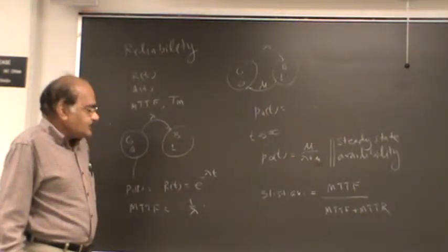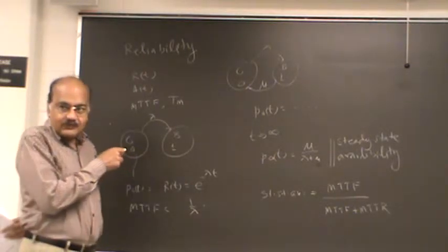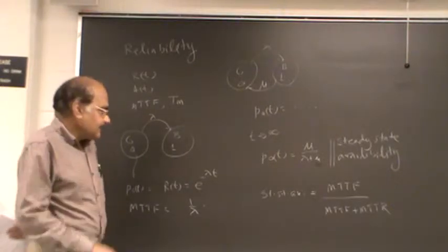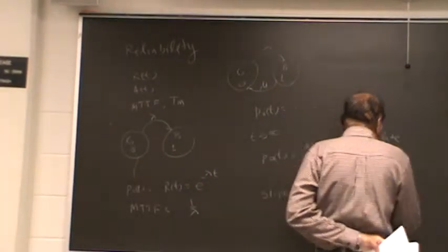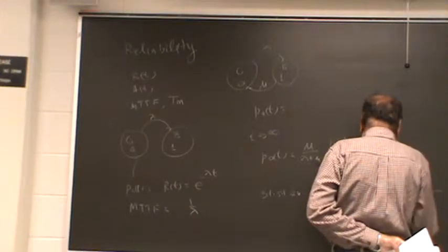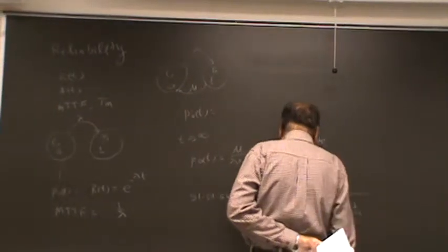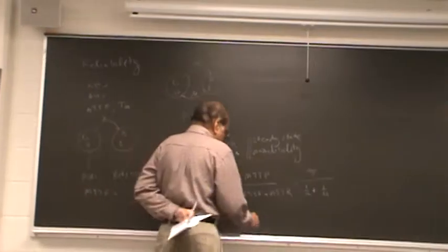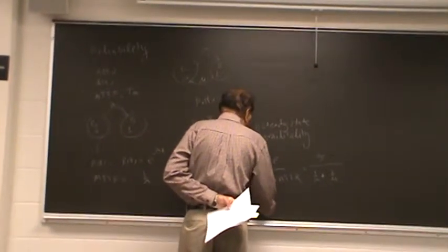So do you think that two equations are the same? Remember that mean time to failure is given by 1 by lambda, and mean time to repair is given by 1 by mu. And if you solve it, if you simplify it, you are going to get the same expression.